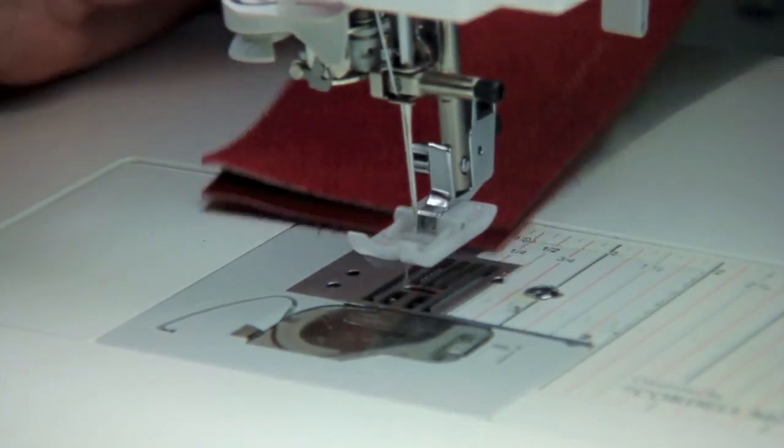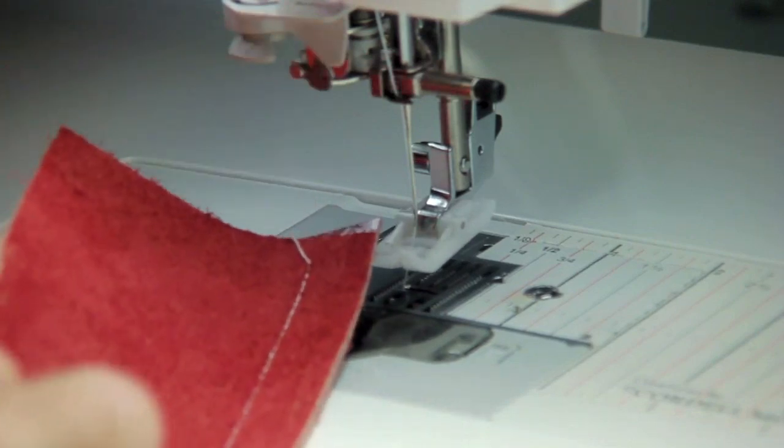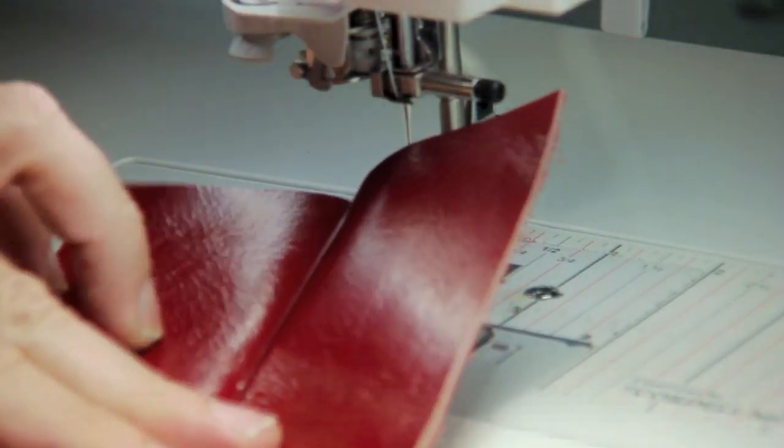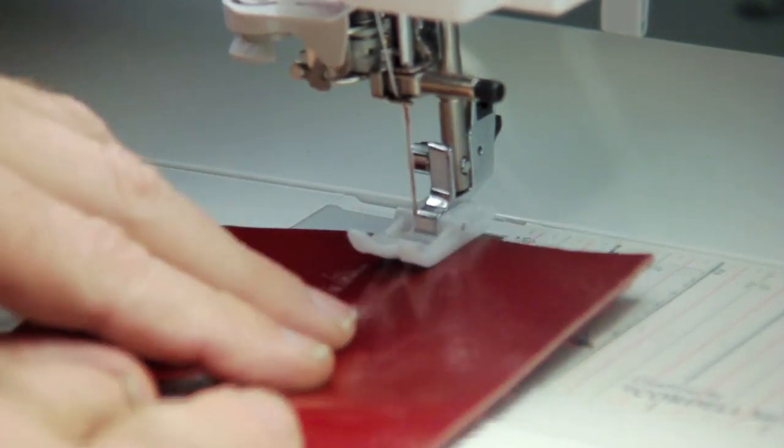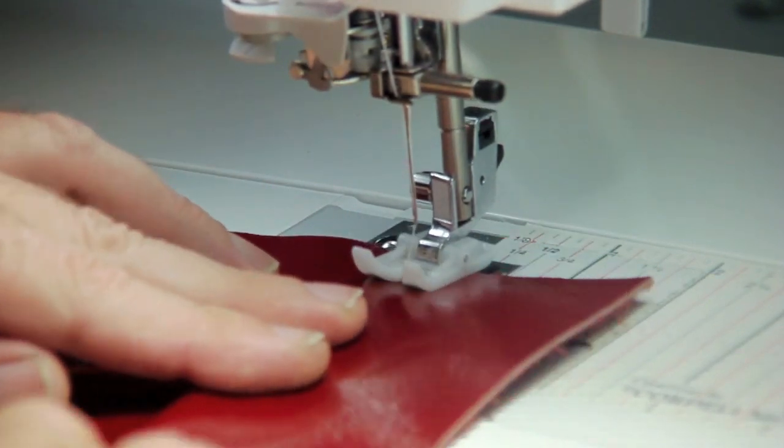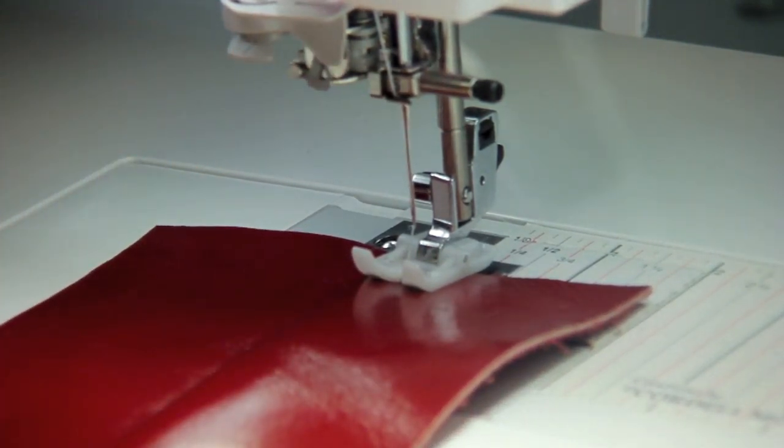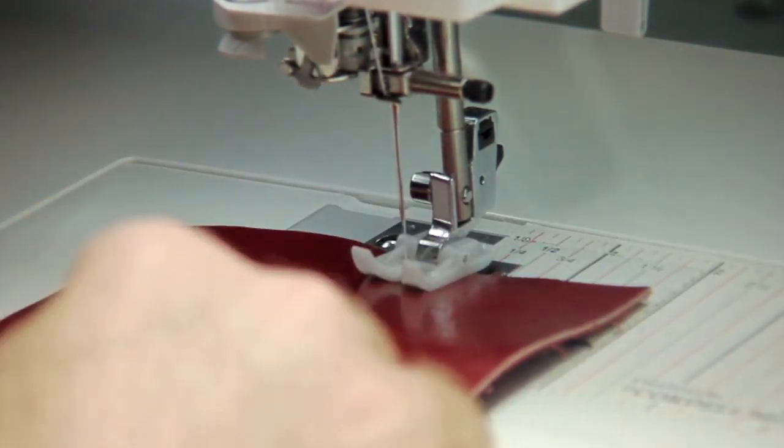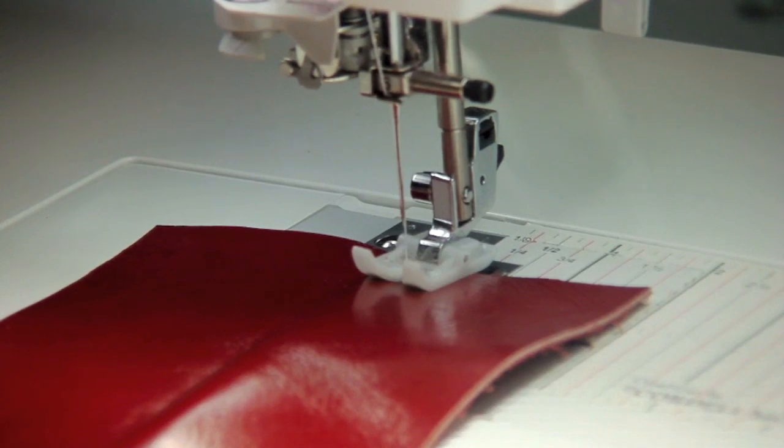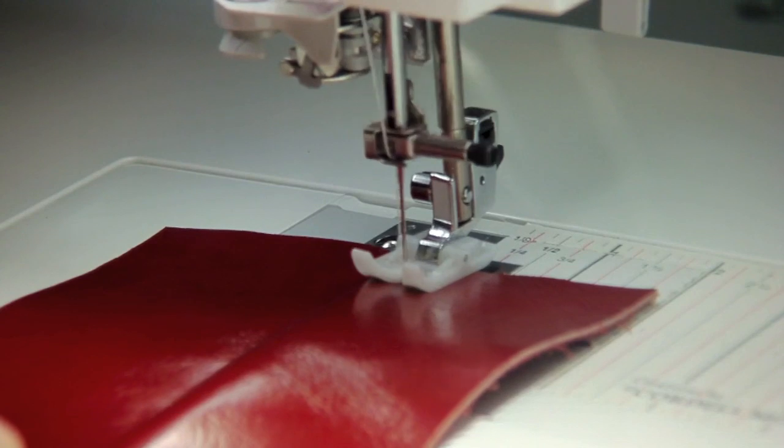There we go. There's the half inch seam. Now what we're going to do is fold one side over. In leather, you're going to pound this down with a hammer. I'm going to ride the edge of my foot around the edge there. You'd want to pound this down with a hammer, which I'm not doing right now, but it'll lay flatter when you do. I'm going to move my needle all the way over to the left, stitch length 5.0, so I'm going to ride right against the edge of that seam and topstitch.